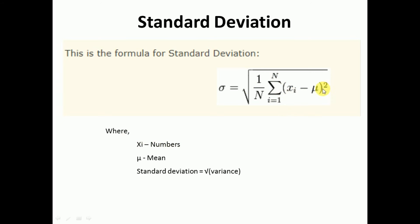Here, xi minus mu — where mu is nothing but the mean, or average of all n numbers. To calculate the standard deviation, you compute the summation from i equal to 1 to n of xi minus mu whole square. For every number, subtract the mean, take the square, and find the summation of all those values divided by n. Whatever this inner part gives is called the variance.